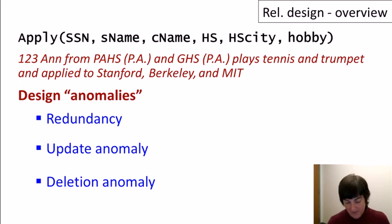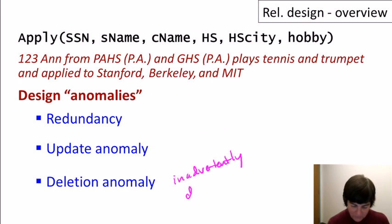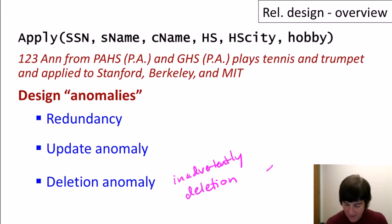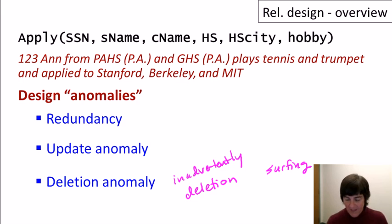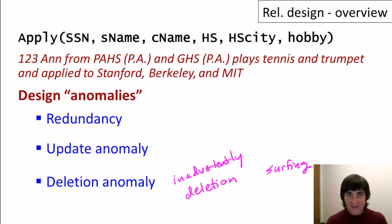The third type of anomaly is the deletion anomaly, where we could inadvertently delete a complete record. For example, if we decide that surfing is an unacceptable hobby for college applicants and delete tuples about surfing, students who have surfing as their only hobby will be deleted completely from the database — probably not what was intended.